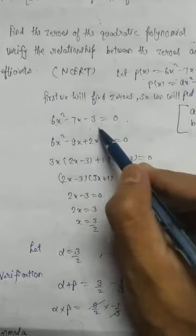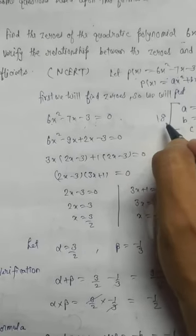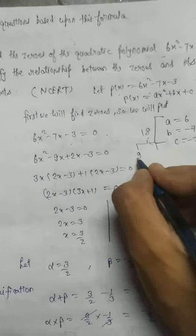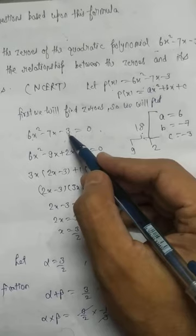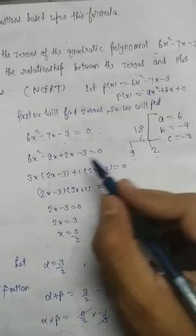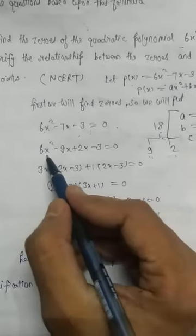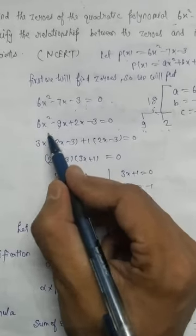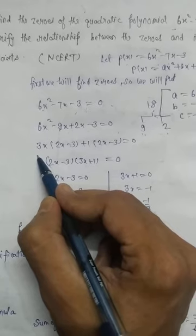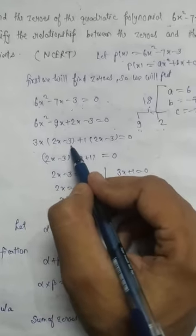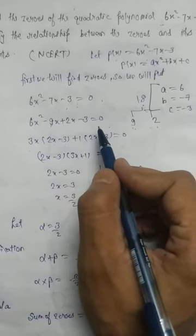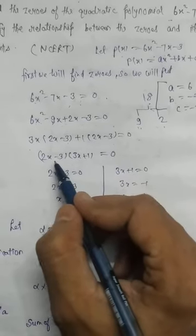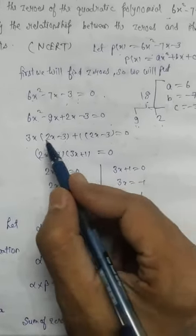So by mid-term splitting: 6x² − 9x + 2x − 3 = 0. Taking 3x common from the first two terms: 3x(2x − 3). From the last two terms, 1 is common: 1(2x − 3). So: (2x − 3)(3x + 1) = 0.